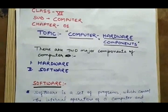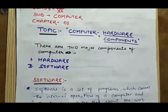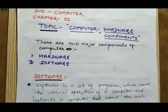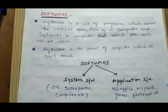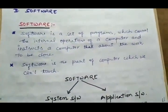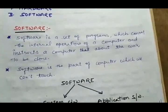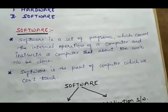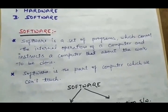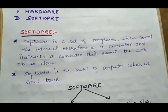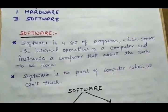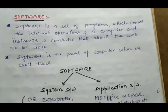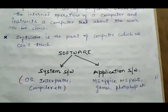There are two major components of a computer: hardware and software. Before describing hardware, I want to give a brief description about software. Software is a set of programs which control the internal operations of a computer and it instructs a computer what and how to do. It is a logical part of a computer which we cannot touch or see.